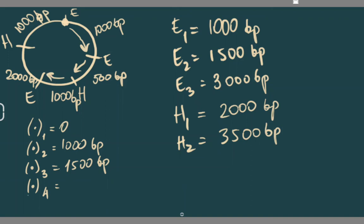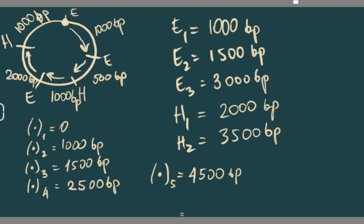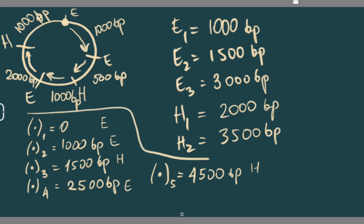The fourth restriction site will be 1000 base pairs away from the third, placing it at 2500 base pairs. The fifth restriction site will be 2000 base pairs away from the fourth, placing it at 4500 base pairs. We then identify each site as EcoRI, HindIII, EcoRI, HindIII, and EcoRI. That is how you do the plasmid mapping.